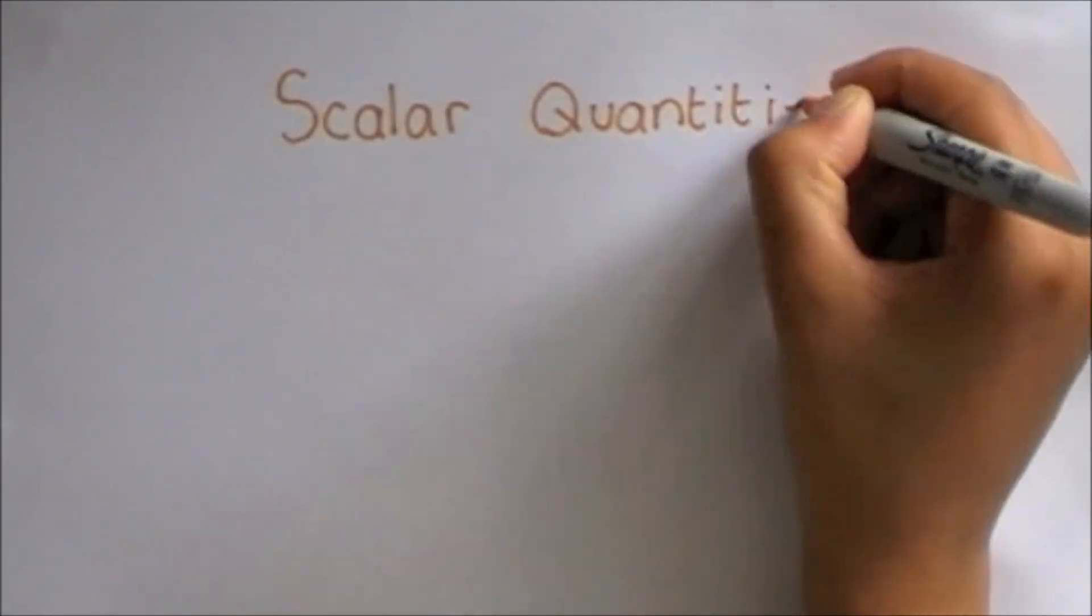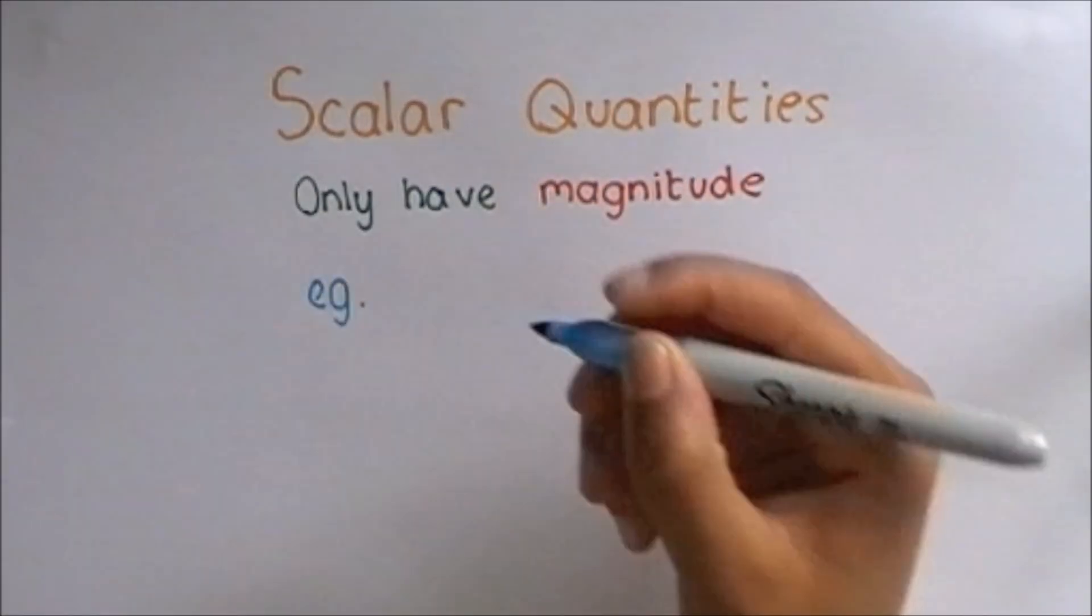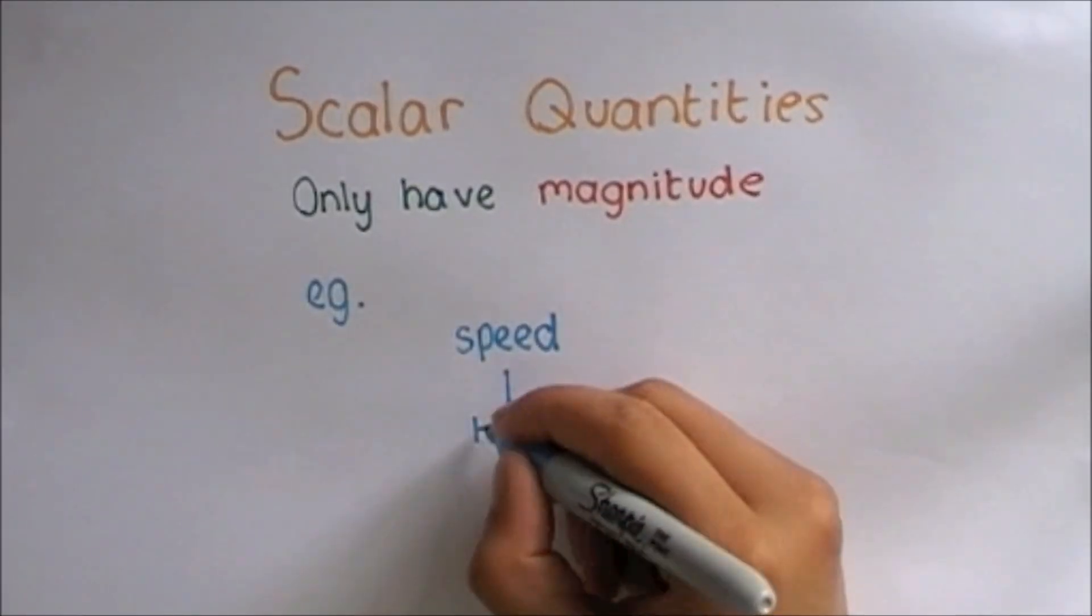Whereas, scalar quantities only have magnitude. An example of this is speed, which can only tell us how fast the object is travelling.